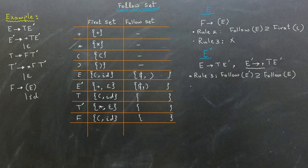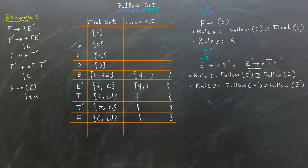Now, let's look at the production where E-bar produces the sequence plus T E-bar. Here, rule 3 suggests that the follow set of E-bar should include the follow set of E-bar itself. However, since a set only contains unique elements, this recursion does not add anything new to the follow set. With that, we are done determining the follow set of E-bar.